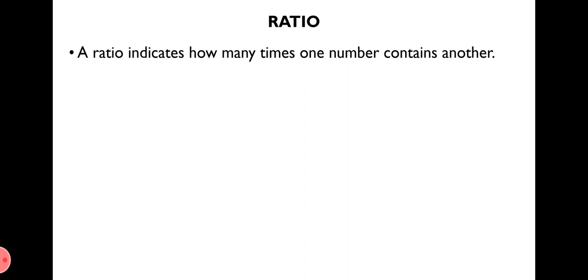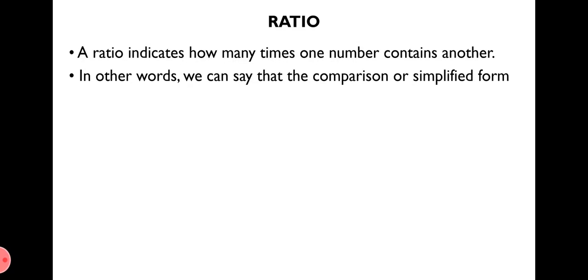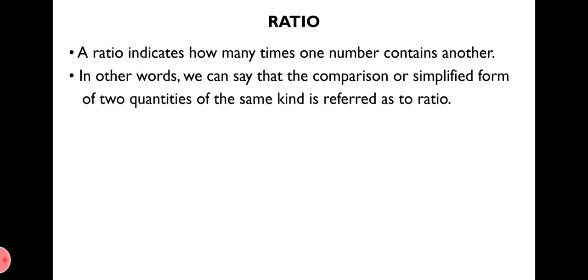Now, what is ratio? A ratio indicates how many times one number contains another. It gives you the idea that if you are comparing two quantities, how many times one quantity is present in another. In other words, the comparison or simplified form of two quantities of the same kind is referred to as ratio — that is, a fraction in reduced or simplified form.